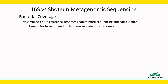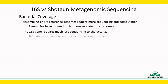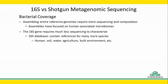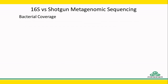Because of this, the assembly of reference genomes has been focused on microbiomes derived from the human body. But since the 16S gene requires relatively very little sequencing to assemble, 16S databases contain many more bacterial species from all sorts of environments. So in terms of the potential bacteria to identify, 16S has the edge over shotgun.